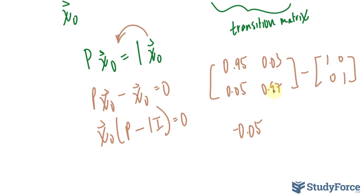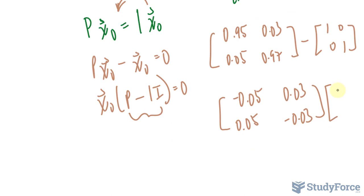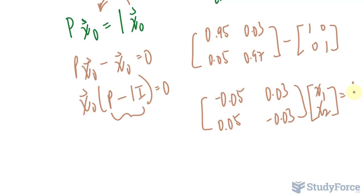Subtracting that element from that element gives us negative 0.05. That stays the way it is. That stays the way it is, and that becomes negative 0.03. So this matrix corresponds to that, and that is being multiplied to the steady state vector, which I'll call x sub-1 and x sub-2. That is equal to 0 and 0, our matrix on this side.